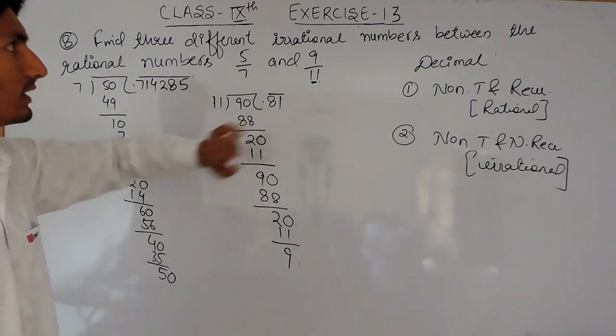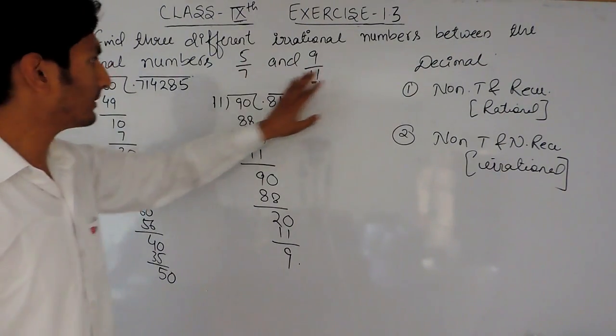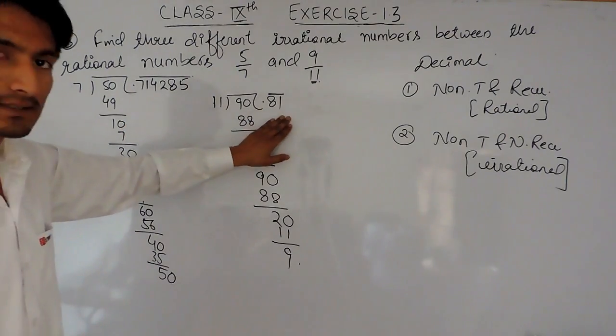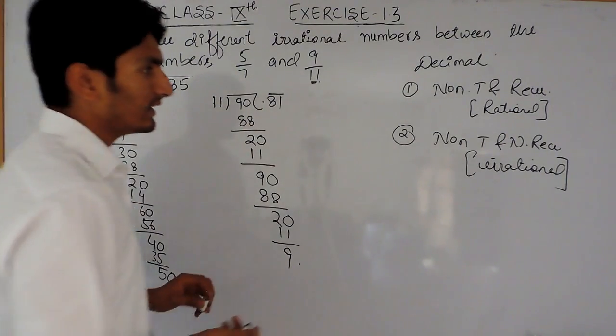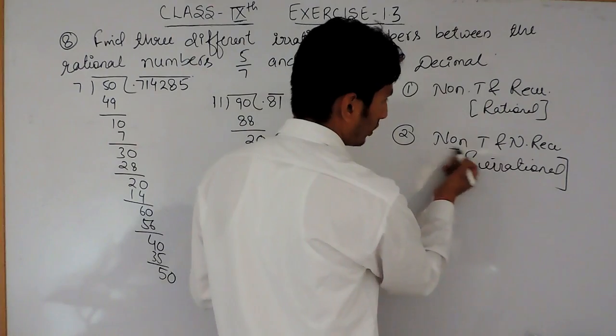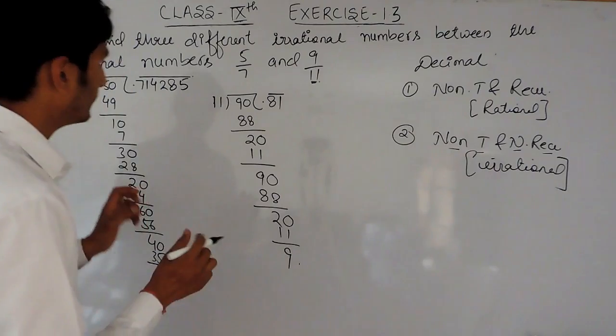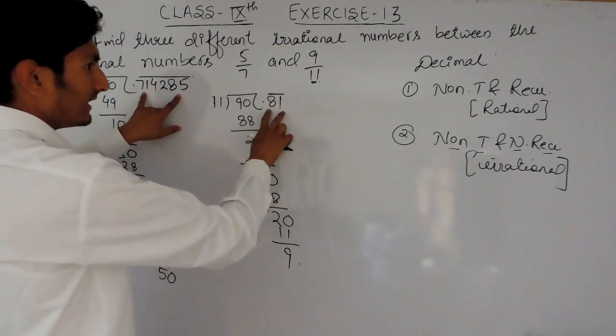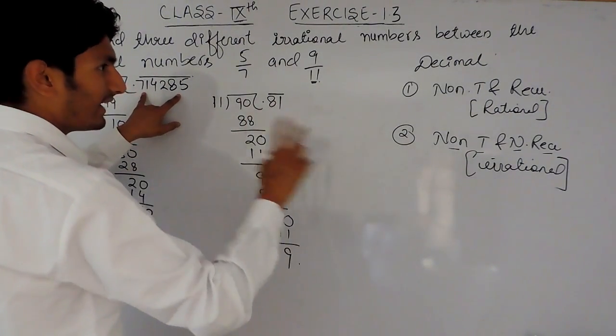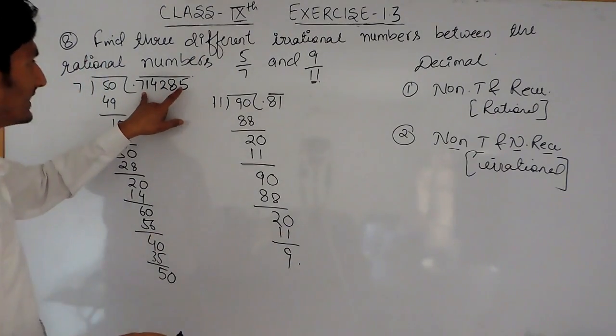Now you have to find irrational numbers between this and this. What are irrational numbers? Irrational numbers are basically non-terminating and non-recurring.